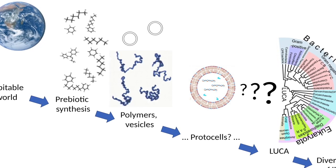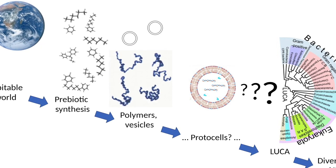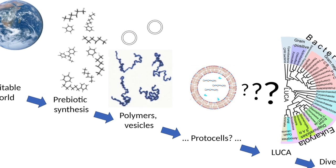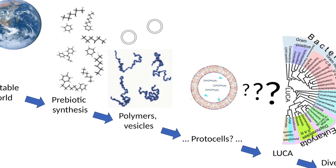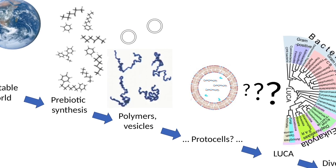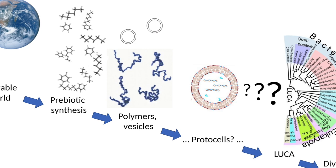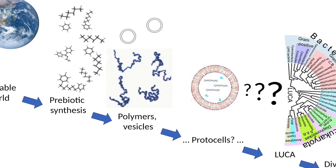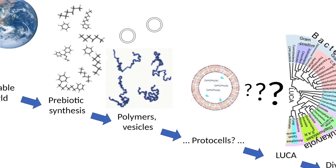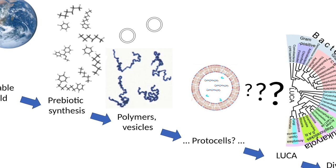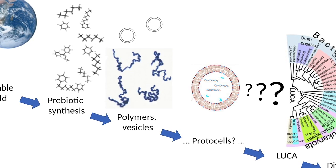The 1952 Miller-Urey experiment demonstrated that amino acids — protein components — can arise from inorganic compounds under early Earth-like conditions, potentially triggered by energy sources like lightning or radiation.